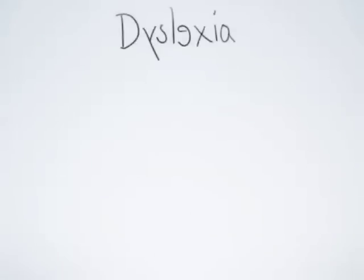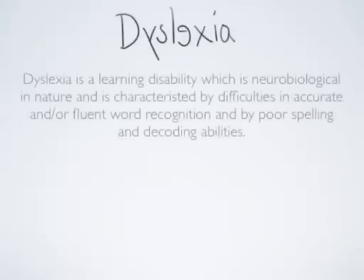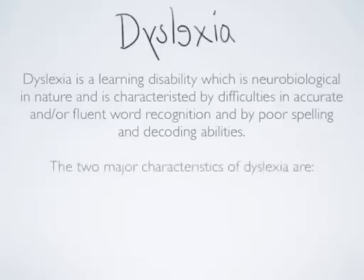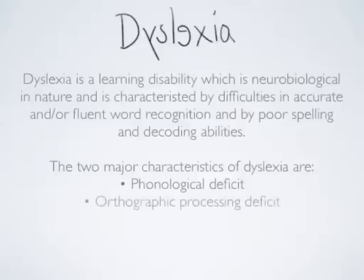Dyslexia is a learning disorder characterized by difficulties in accurate word recognition and poor spelling. The two major problems faced by the dyslexic are: first, the phonological deficit, which is the inability to associate the correct sound with the correct alphabet; and second, the orthographic processing deficit, which is the inability to remember the correct look of a particular alphabet.